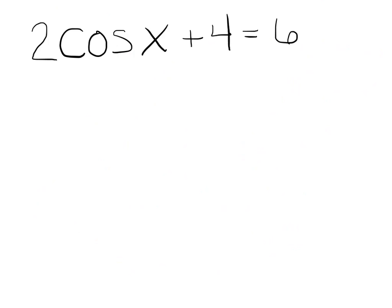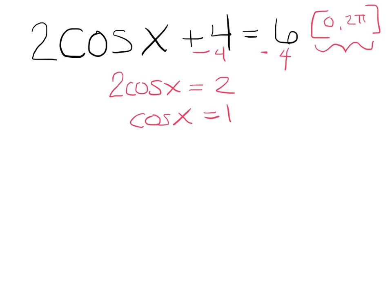All right, well believe it or not, this is the last one I have for you tonight. So let's say our answer is going to fall between 0 and 2 pi. So again, this is just telling me to put my final answer in radians. So go ahead, pause it, try it on your own. Just solve for cosine x. I've got cosine x equals 1. I did it all in my head. I subtracted the 4 over. I've got 2. I divided both sides by 2. And I get cosine x equals 1. Again, you're halfway home there.